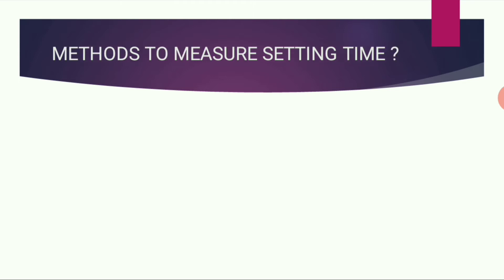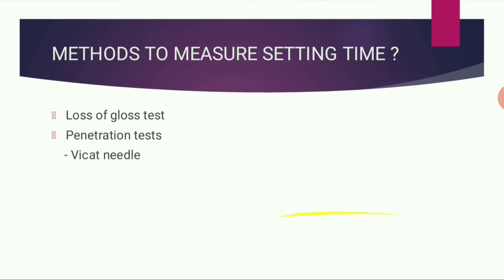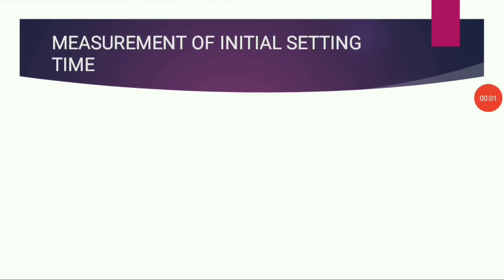What are the methods to measure setting time? The first is the loss of gloss test, and the second are penetration tests, which use the Vicat needle and the Gilmore needle.